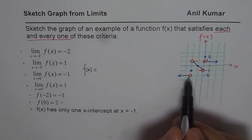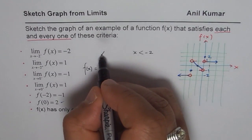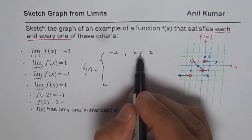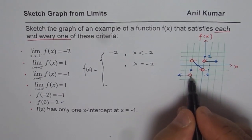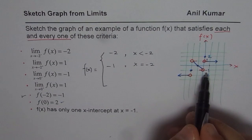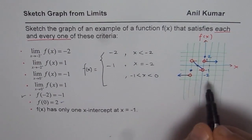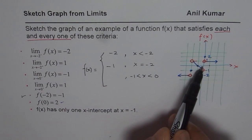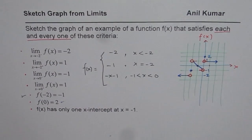Let us begin with the leftmost piece. When x < -2, the value of the function is -2. When x = -2, the value of the function is -1. Between x = -2 and x = 0, we have a straight line. The slope of this line is -1: one unit down as you move one unit right. The y-intercept is -1, so the equation is f(x) = -x - 1 for that interval.